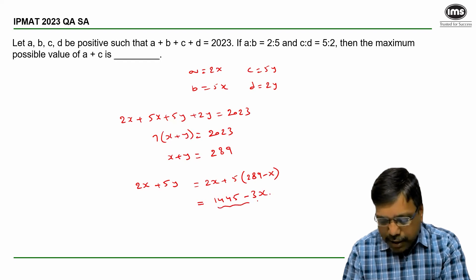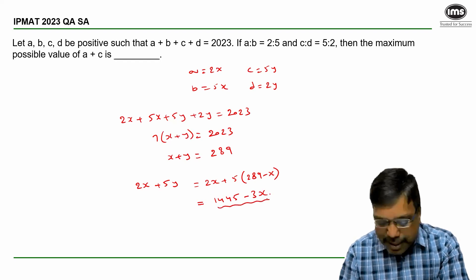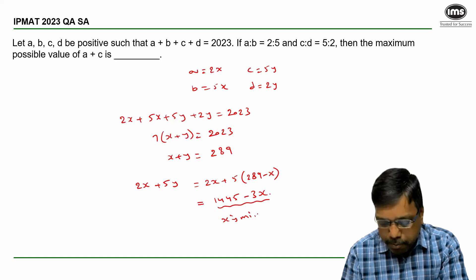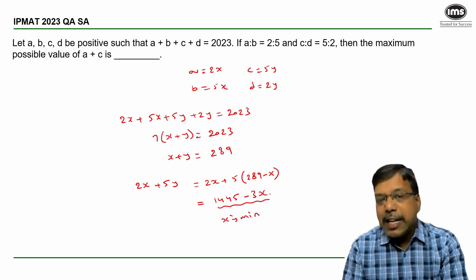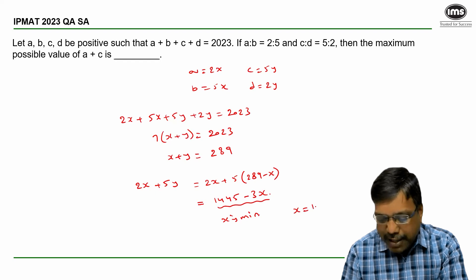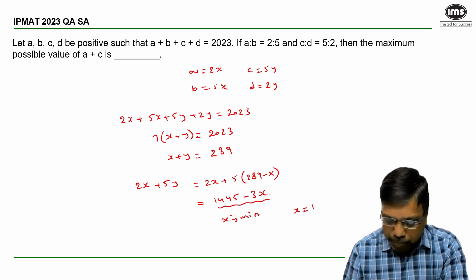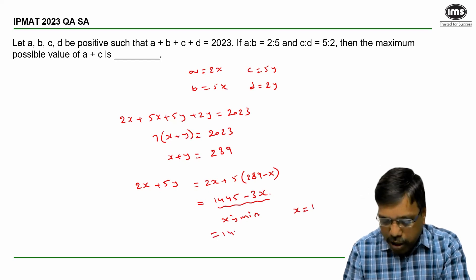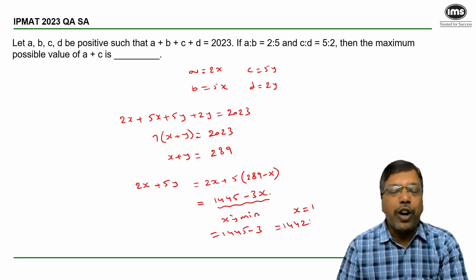Now, this value will be maximum when x is minimum. And since A, B, C, D are positive numbers, the minimum value of x I can take is 1. So, which will give me 1445 minus 3, that is 1442.